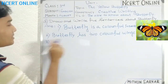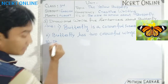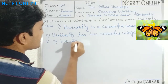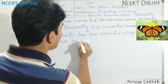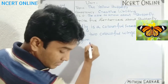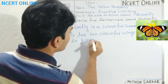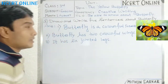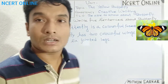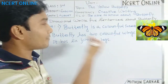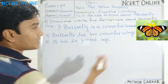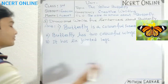Then we can write number 3: Butterfly has six jointed legs. Like other insects, butterfly also has six jointed legs.